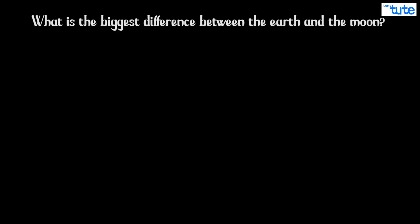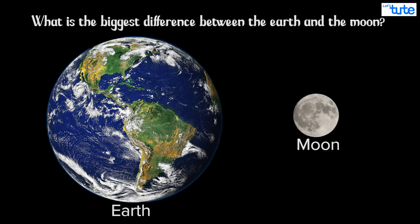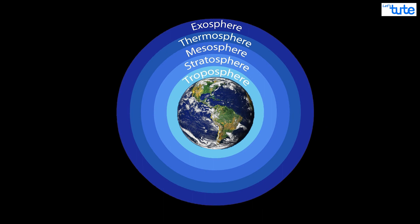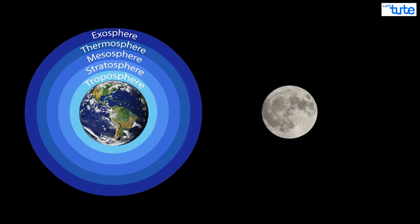What is the biggest difference between the earth and the moon? Well, the earth has an atmosphere and the moon doesn't. So that must be the reason for this. The atmosphere.